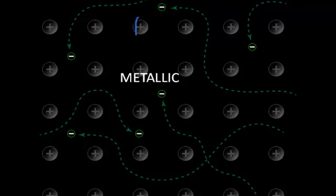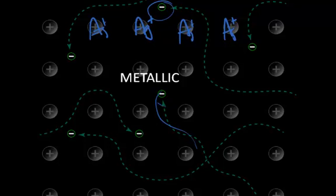For example, if we think of this model as being silver, each of these cations would be a silver ion fixed in space, and the outer electrons are free to move throughout the crystalline network.